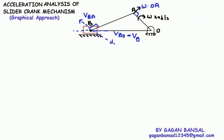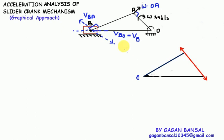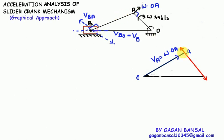To draw the velocity diagram, consider a point O. Velocity of point A with respect to O will be perpendicular to OA, so draw a vector O-a representing velocity of A. Its magnitude is omega times OA in the direction perpendicular to link OA. We know the magnitude as well as direction. For point B on link AB, velocity of B with respect to A is perpendicular to AB, so from point A draw vector AB.